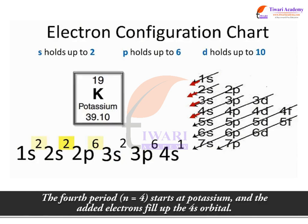The fourth period, n is equal to 4, starts at potassium, and the added electrons fill up the 4s orbital.